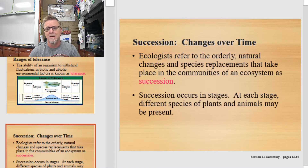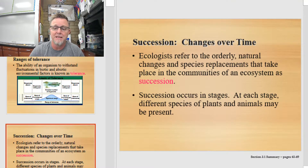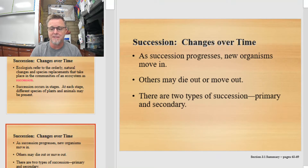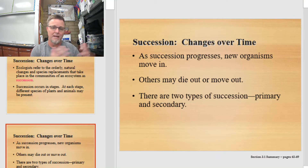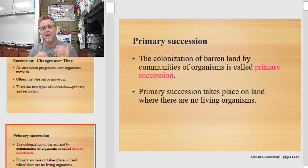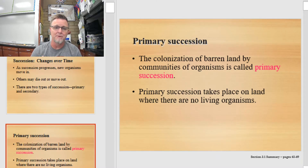Next, let's look at succession. Succession is change over time. Ecologists refer to the orderly natural changes and species replacements that take place in communities as succession. There are two types: primary succession and secondary succession. As succession progresses, new organisms will move into an area and others may die or move out — new life coming in, old life moving out. In primary succession, what we're doing is colonizing barren land. The very first thing you have to grow in primary succession isn't a plant — it's dirt. Primary succession starts off with barren rock.